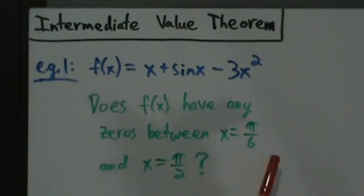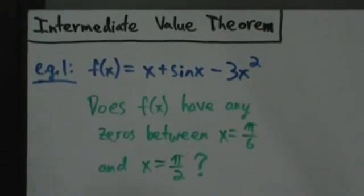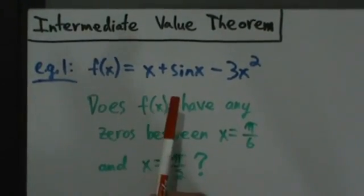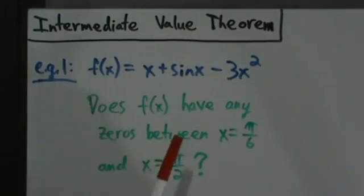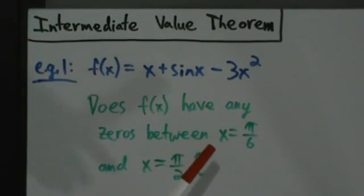We only have to verify that the function is continuous and that the value of the function at these two points have opposite signs. So f(x) = x + sin(x) - 3x². Does f(x) have any zeros between x = π/6 and x = π/2?